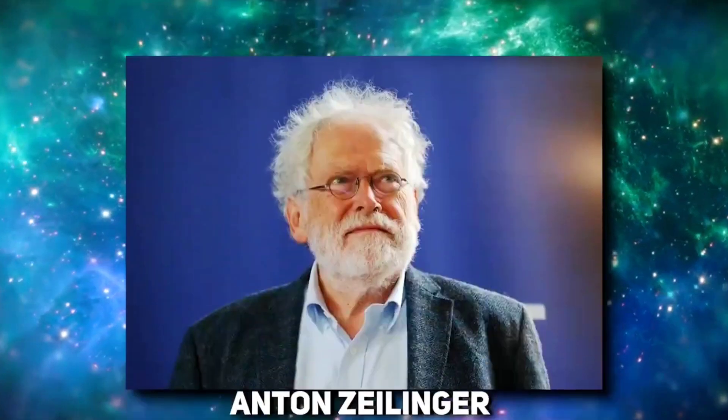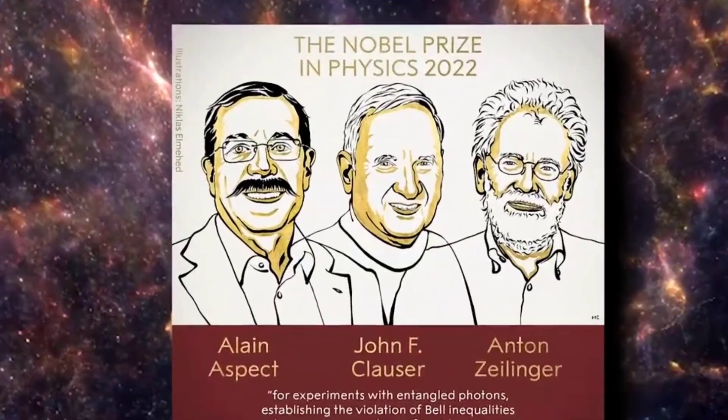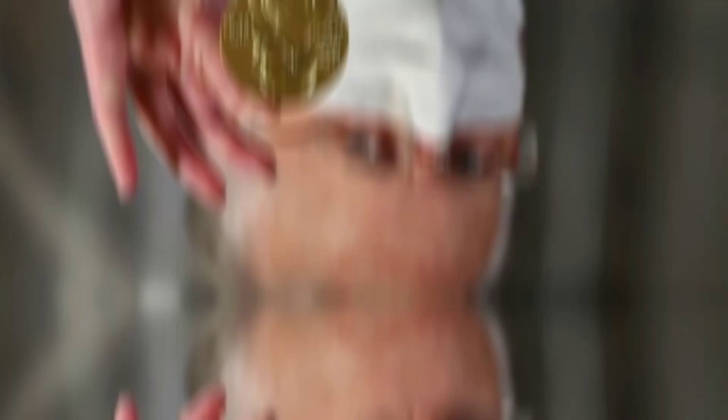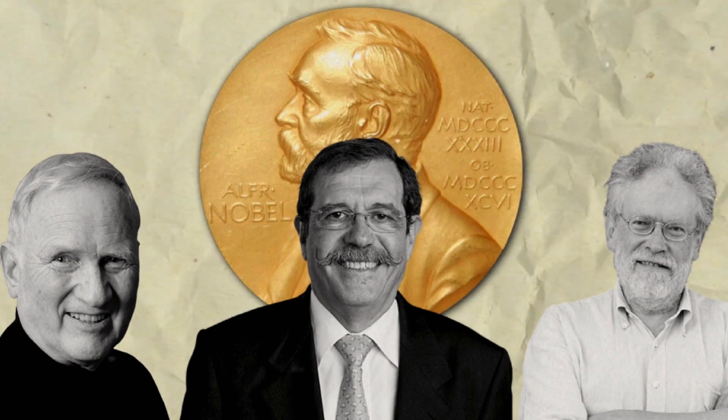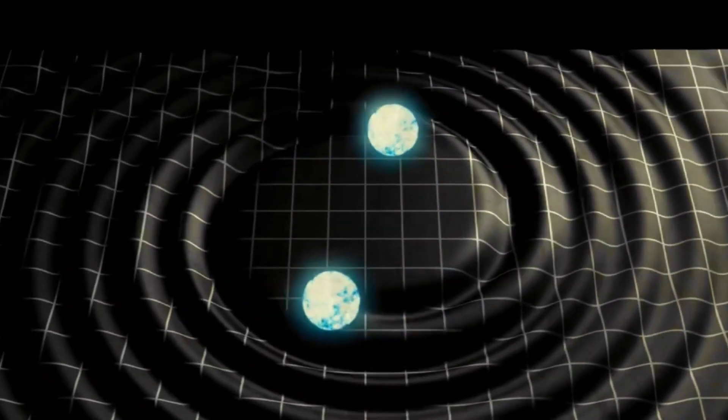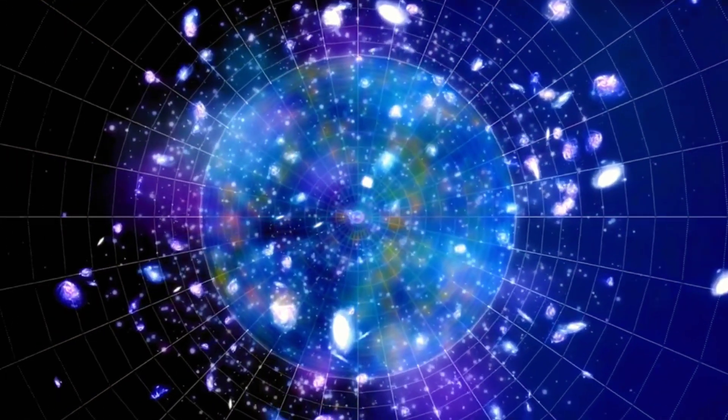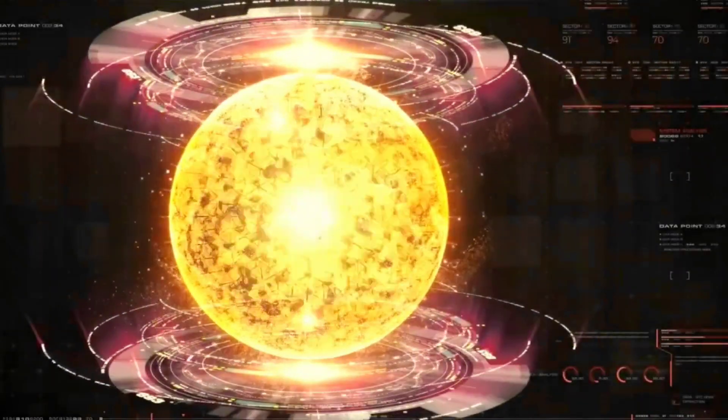John Clauser, Anton Zeilinger, and Alain Aspect, three theoretical physicists, were just awarded the 2022 Nobel Prize in Physics for their work beginning in 1972 and continuing through several tests that demonstrate the falsity of the local realism worldview. In 2022, they will each receive a part of the Nobel Prize in Physics for experiments with entangled photons, showing the violation of Bell inequalities, and pioneering quantum information science.